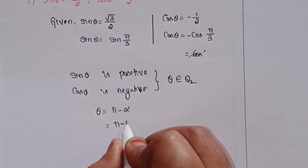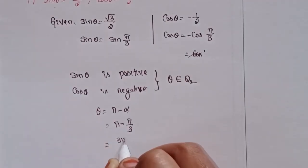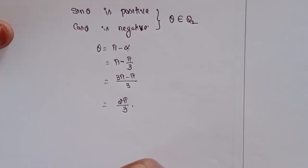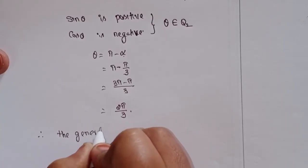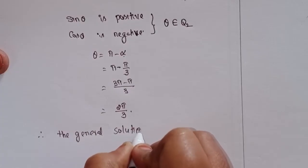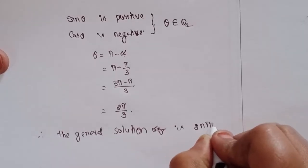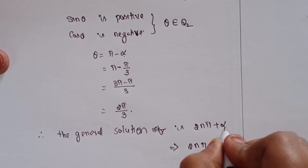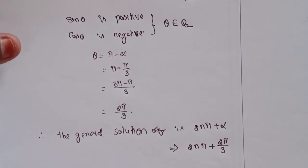In Quadrant 2, sin is positive and cos is negative, so theta equal to π minus α. That means π minus π/3, which gives 2π/3. Therefore, the general solution is theta = 2nπ + 2π/3.